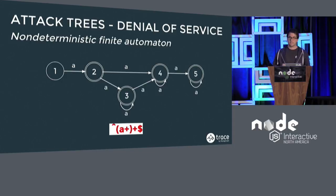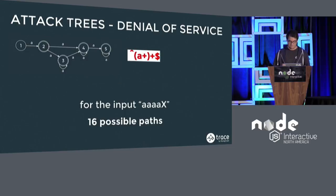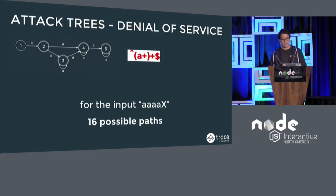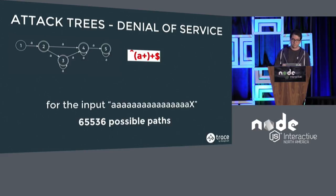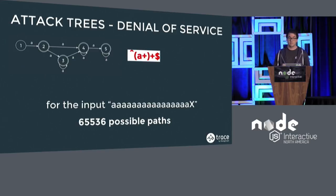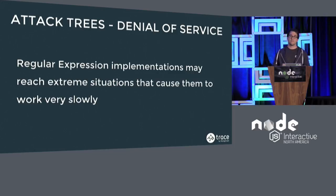Let's take an example of why it can be problematic. Imagine you have a short input — only four A's and an X at the end. In this case, there are 16 possible paths on this tree. But if you have a much longer input, like 14 A's and an X at the end, there are more than 60,000 possible paths to match against. Some implementations of regex engines can reach extreme situations where comparing and matching against them can take a lot of time.